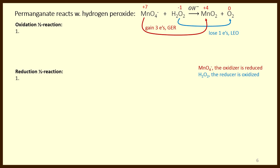Permanganate is gaining electrons just as oxygen did when it reacted with iron — so permanganate is the oxidizer, and as it gains electrons, it's being reduced. At the same time, peroxide is giving up electrons in the same way that iron metal gave up electrons — as it gives up its electrons, it's being oxidized; it is the reducing agent. Now that we know peroxide is being oxidized, we write that half-reaction first, and we know that permanganate is being reduced.